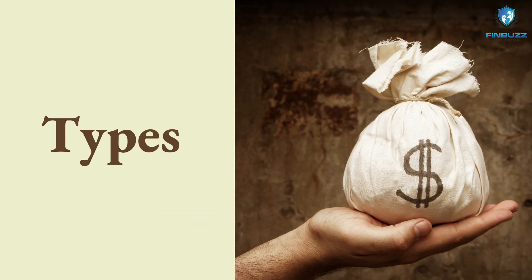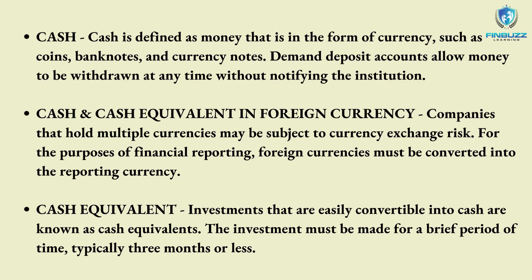Cash and cash equivalents are also of different types. The first type is cash. Money that is in the form of currency such as coins, bills, and currency notes is referred to as cash. An account type known as a demand deposit allows money to be withdrawn at any moment without informing the institution. Checking and savings accounts are two examples of demand deposit accounts. Cash totals contain the balances of all demand accounts as of the date of the financial statements.